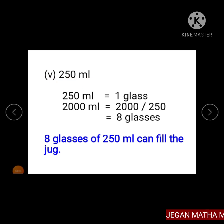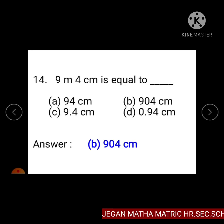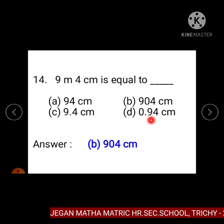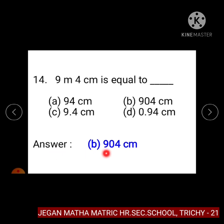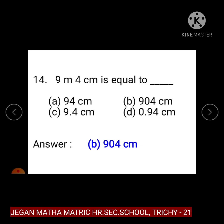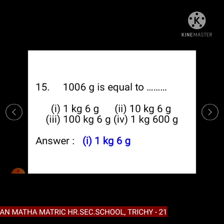Subdivision 5: 250 ml. 250 ml equals 1 glass. Therefore, 2000 ml divided by 250 equals 8 glasses. So, 8 glasses of 250 ml can fill the 2 litre jug. Question number 14: 9 metre 4 centimetre is equal to — Option A: 94 centimetre, Option B: 904 centimetre, Option C: 9.4 centimetre, Option D: 0.94 centimetre. The answer is Option B, 904 centimetre, because 1 metre equals 100 centimetre, so 9 metre equals 900 centimetre, and 900 plus 4 equals 904 centimetre.